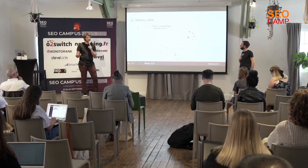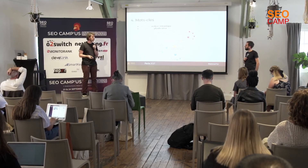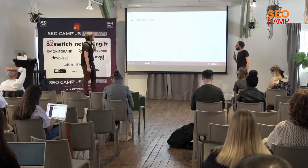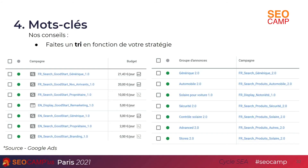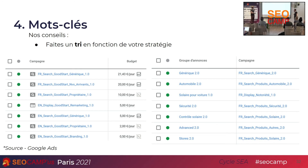Il faut quand même prendre le temps d'analyser chacune des listes et aller soit changer le type de correspondance, soit refuser toute une série de mots-clés qui sont un peu hors-sujet. Un autre moyen de mieux utiliser les mots-clés, c'est d'avoir des campagnes différentes en fonction des thèmes — par exemple, un assureur avec des produits différents pour les propriétaires, les nouveaux arrivants ou les locataires. Ne pas hésiter à travailler avec beaucoup de campagnes avec des mots-clés ciblés et des budgets séparés.